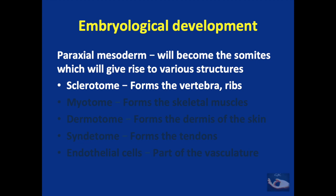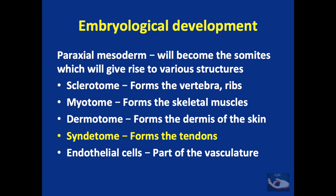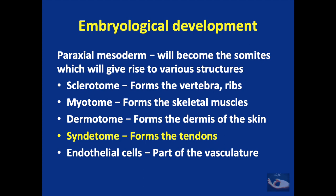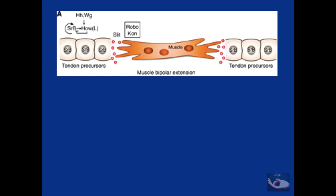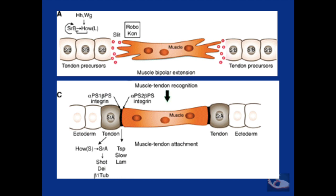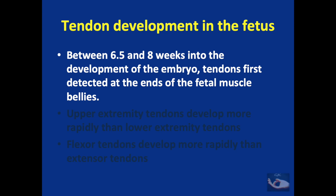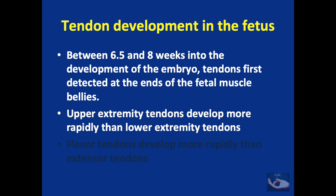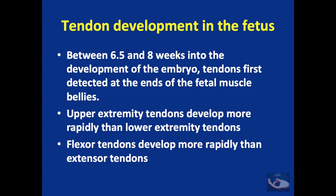The sclerotome forms the vertebra and the ribs. The myotome forms the skeletal muscles. The dermatome forms the dermis of the skin. The syndetome forms the tendons. Endothelial cells, which form part of the vasculature, also arise from the somites. The muscle develops independently with tendon precursors developing on both sides, attaching the muscle to the bone both proximally at the origin and distally at the insertion. Between 6.5 and 8 weeks into embryonic development, tendons are first detected at the ends of the fetal muscle bellies. Upper extremity tendons develop more rapidly than lower extremity tendons, and flexor tendons develop more rapidly than extensor tendons.